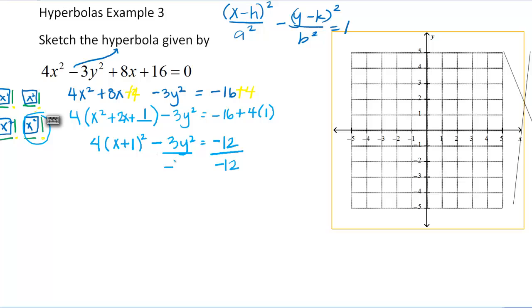Divide by negative 12, and divide by negative 12. Okay, so now I get a one equals to, and this is going to be a y squared and this is over four, and this is a plus now, right, because negative divided by a negative is a positive. And now this is going to be my minus. So that's x plus one quantity squared over three.